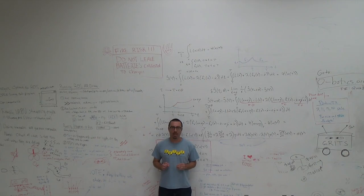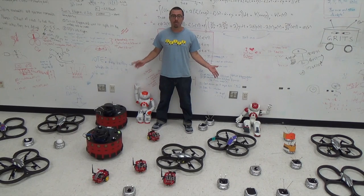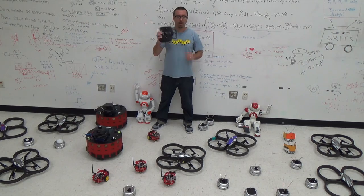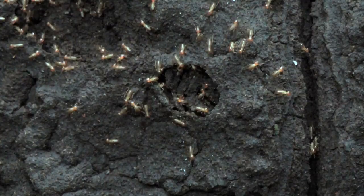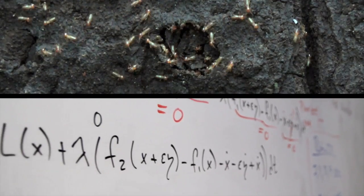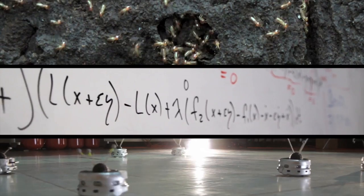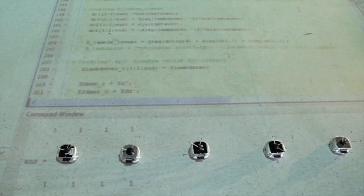Imagine that you're surrounded by a large team of robots and you have a single joystick for making them move in useful ways. What should you do with that joystick? There are many possible answers that draw inspiration from the world around us, but they all rely on control theory as the glue between abstract ideas and actual robotic elements.